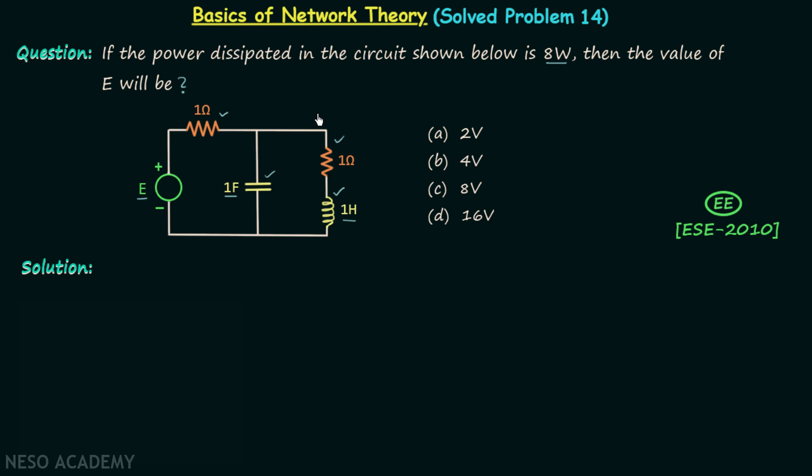In order to find out the value of E, we are required to focus on three important points. The first point is the capacitor will offer infinite reactance to the current in this branch. The reason is we are having the DC source, and we know DC has the frequency equal to 0 hertz.